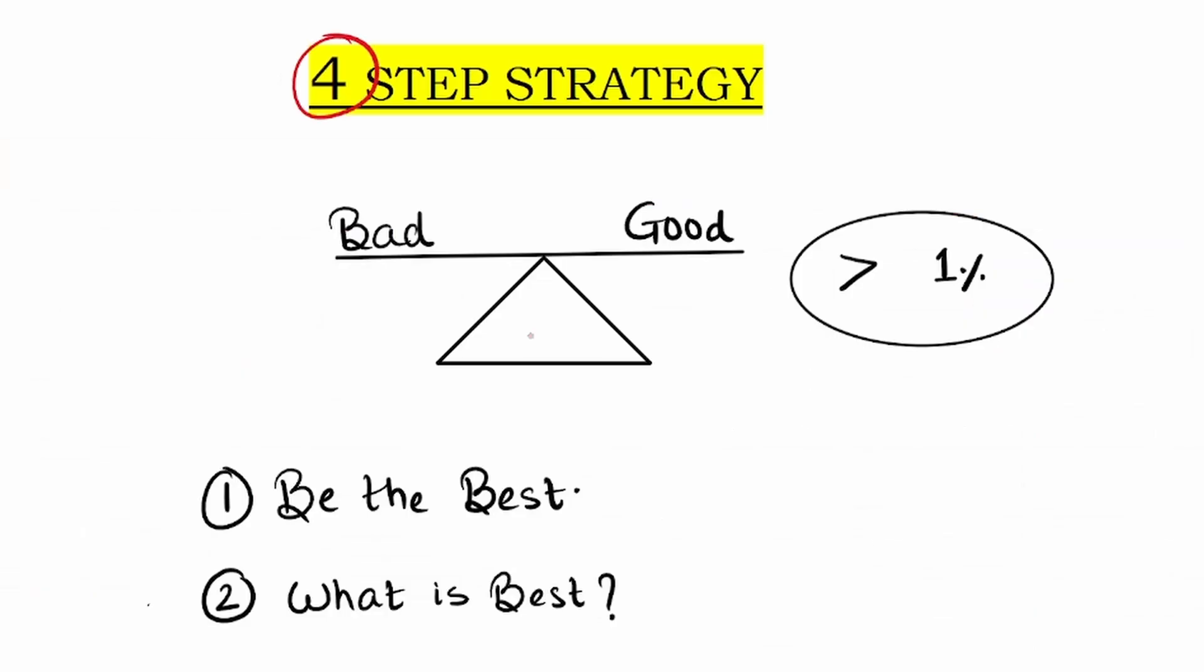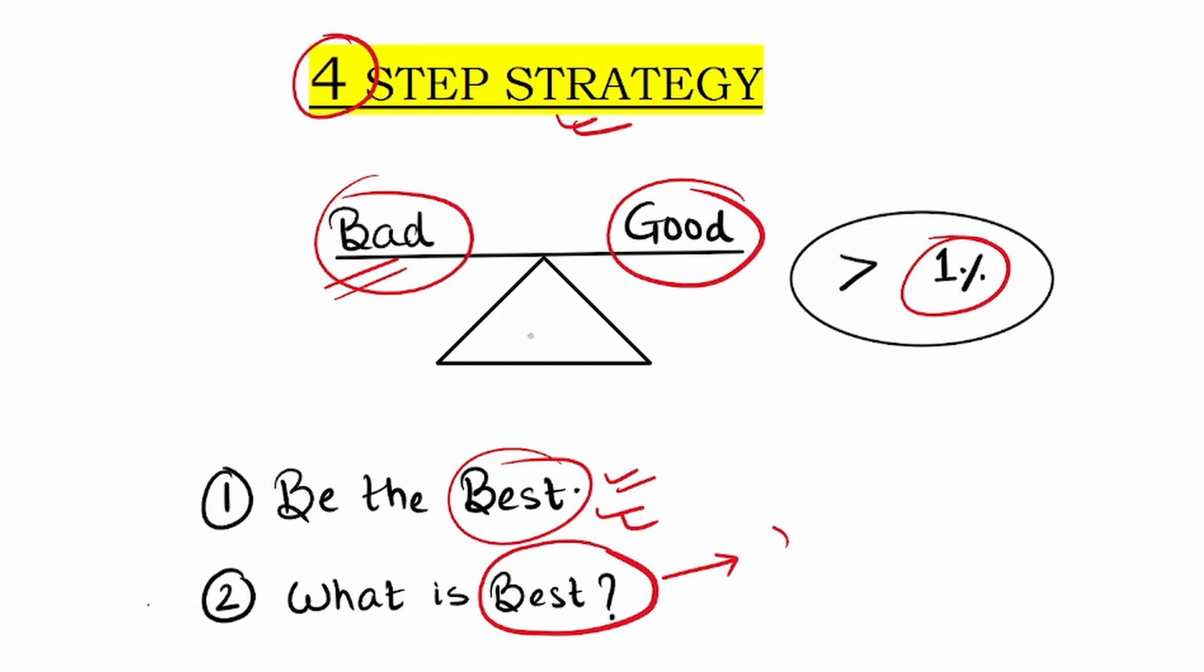For mathematics subject, I'll be telling you a four step strategy that you are supposed to follow. And before I get on to the strategy part, you need to understand one thing. It does not matter if you have traditionally been a bad student at mathematics or if you have been a good student in mathematics. Ultimately, the people who are going to be selected in the examination are less than 1%. So you need to focus on being the best in the subject. And this is the psychology part that you need to understand. You don't have to burden yourself that you have been a bad student in mathematics. If you want to crack this examination, you have no other choice, but you will have to become the very best in mathematics.